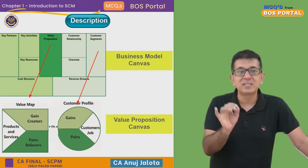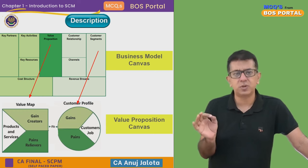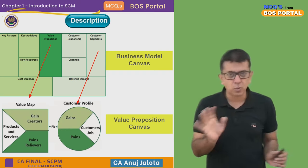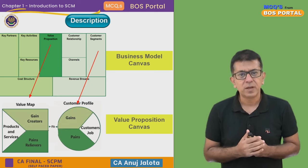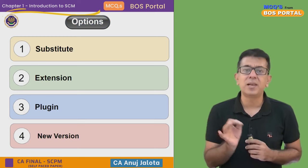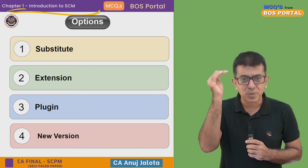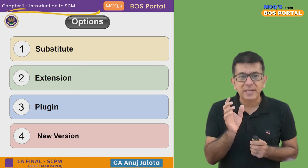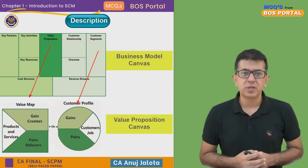The business model canvas is the top-level framework, and out of its nine parts, two get explained further through the value proposition canvas. So it is not a substitute — substitute means either this or that, and it is not that. It is not an extension as such, and it is not a new version either. In this case, it is a plugin — meaning it makes your business model canvas far better. You can test your different products and services with the help of the value proposition canvas.